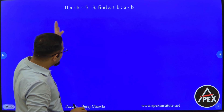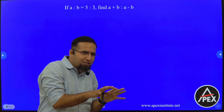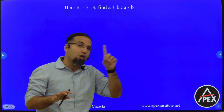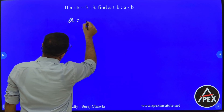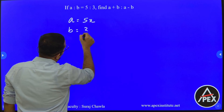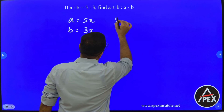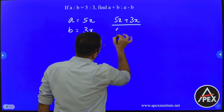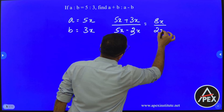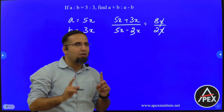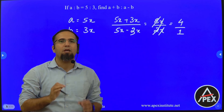Now A is to B is given as 5 is to 3, and we need to find A plus B is to A minus B. Whenever a ratio is given, the best way is to convert ratios into actual values. So A can be taken as 5X and B as 3X. Replacing: numerator is 5X plus 3X and denominator is 5X minus 3X, giving 8X divided by 2X. X and X cancel, and 8 by 2 simplified gives the final ratio of A plus B is to A minus B as 4 is to 1.